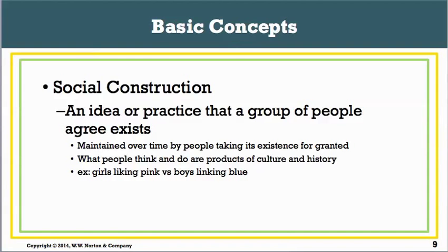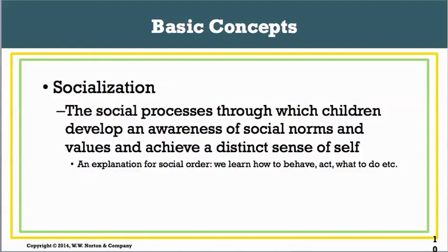What people think and do are products of culture and history. For example, girls liking pink versus boys liking blue — it's something we agree upon and believe is true, but as a society we created it; that's why it's a social construction. The issue of socialization — which we'll cover more in Chapter 4 — is the process through which children develop an awareness of social norms and values and achieve a distinct sense of self, leading to an explanation for social order.